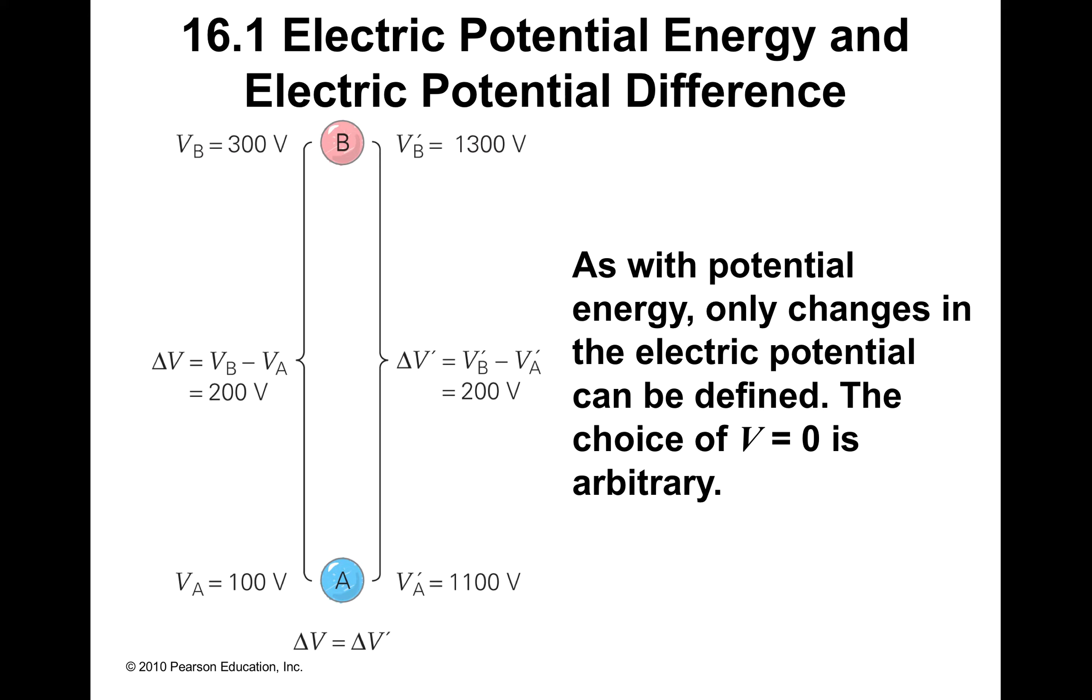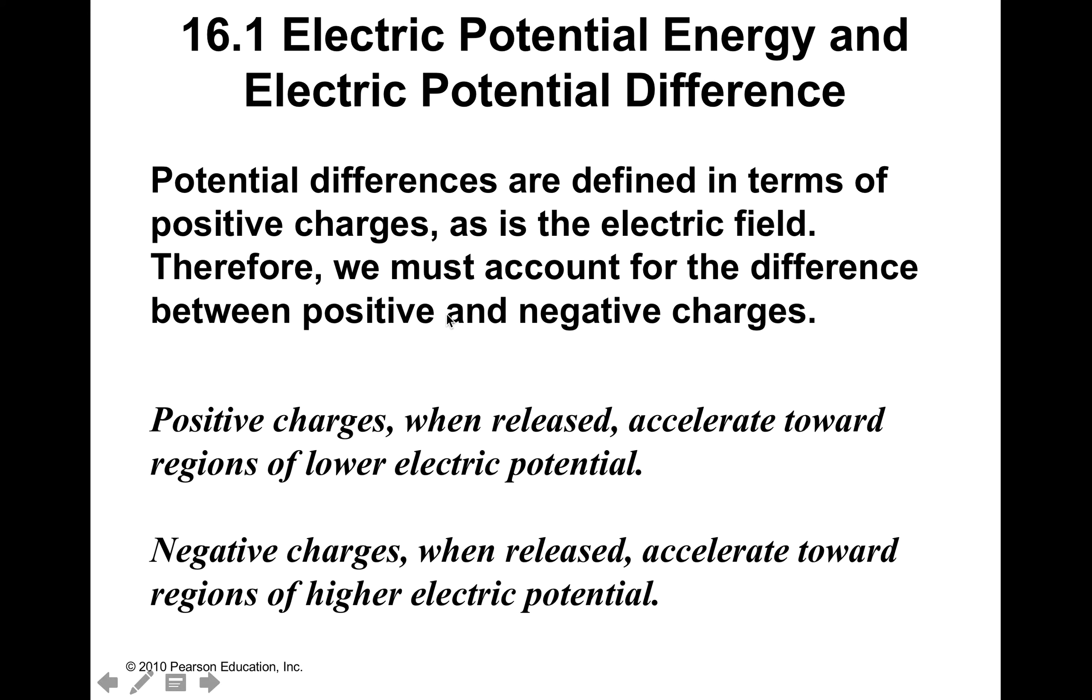All right, so right here 1300 volts, 1100 volts - the potential difference here is positive between Vb and Va is positive 200 volts. Lower potential, higher potential, or it could be 300 and 100 volts. Choice of V0 is completely arbitrary. Positive charge, here's a huge one - this might be a nice little quiz question you might get when you come in.